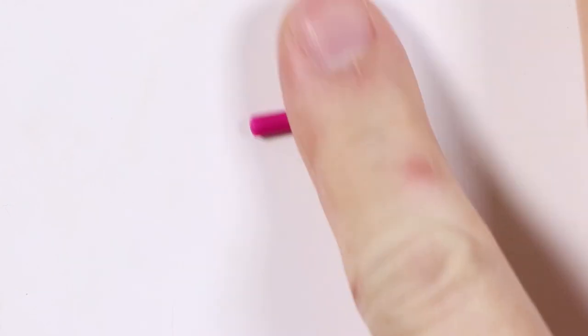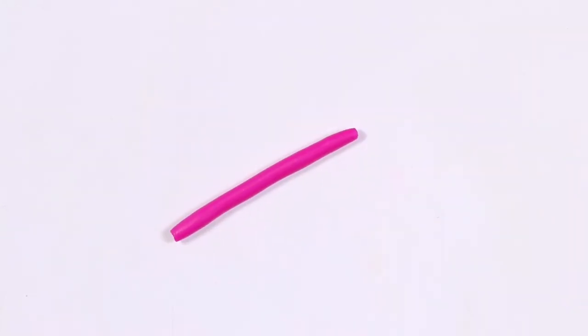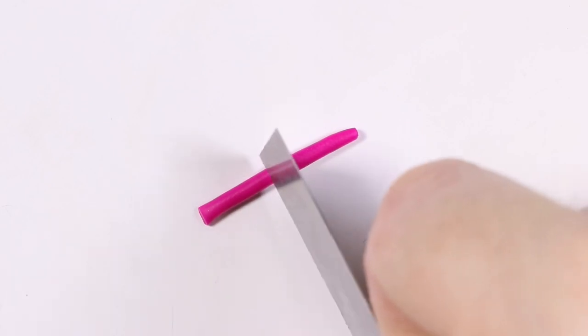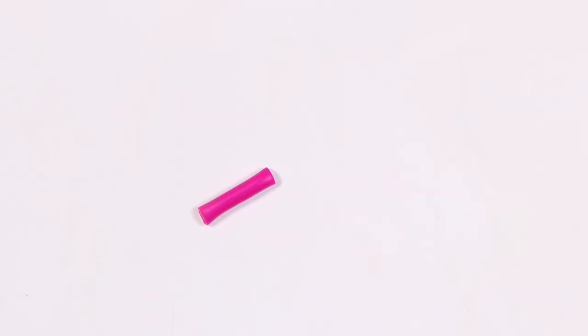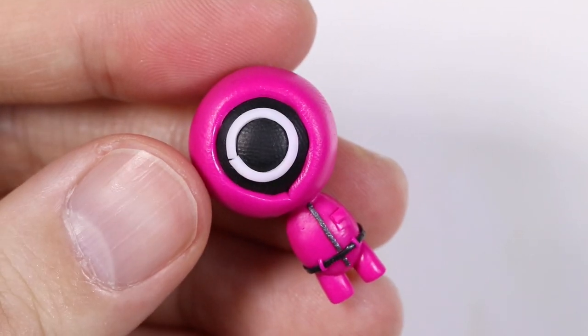And we're going to make the arms. For the arms, we're going to take the same pink clay, roll it out into a cylinder and cut out two little cylinders at a slant, and place that onto the body.